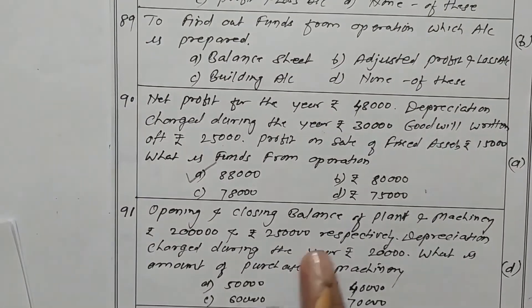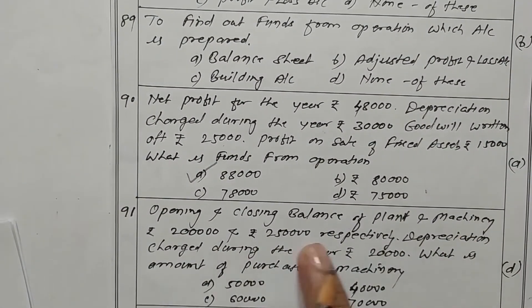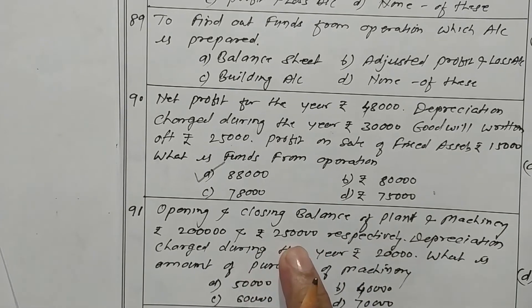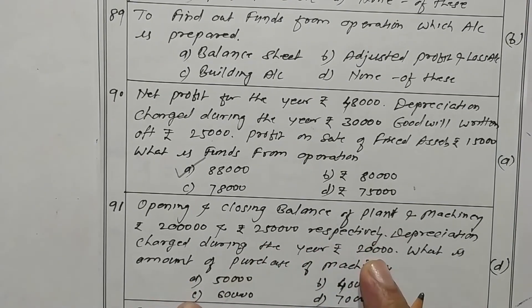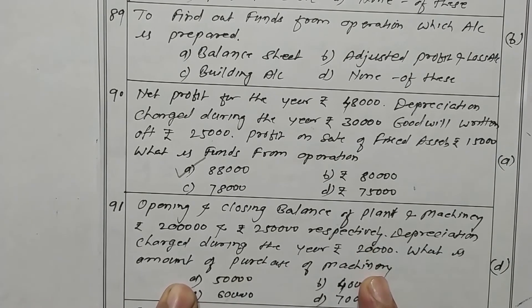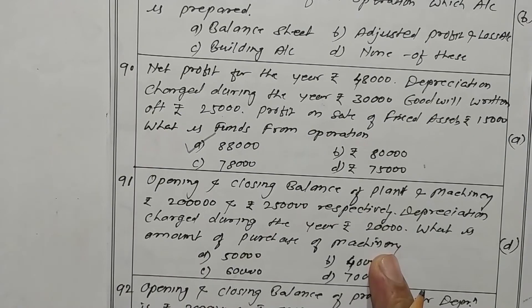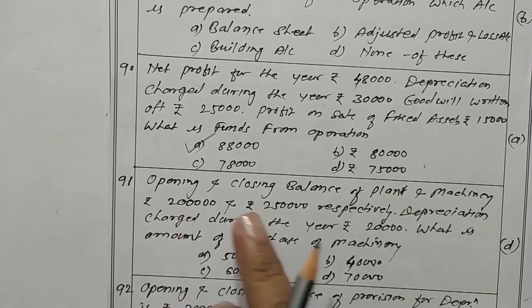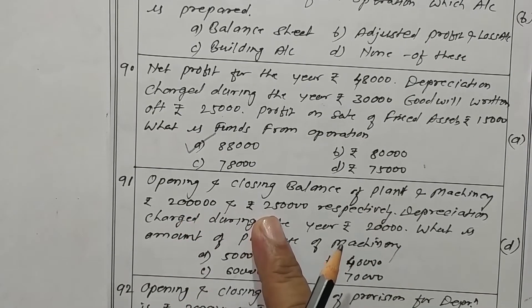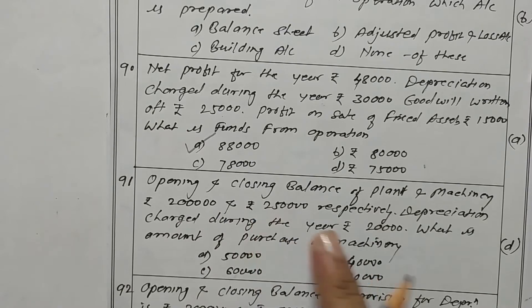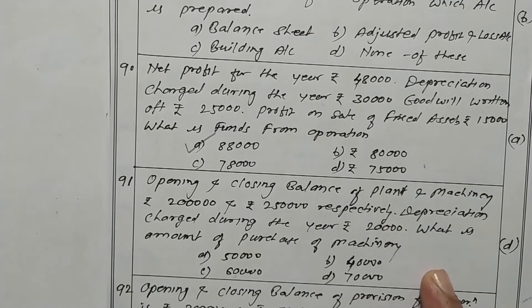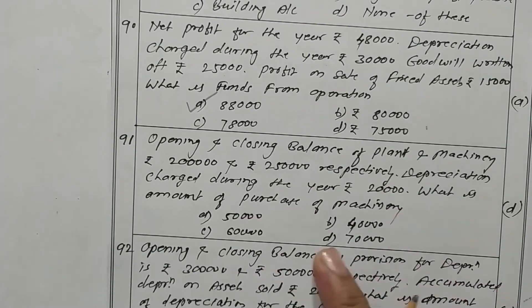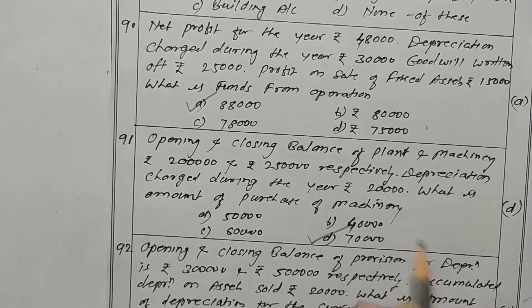Opening and closing balance of plant and machinery is rupees 2,00,000 and rupees 2,50,000 respectively. Depreciation charged during the year is 20,000. Amount of purchase of machinery: closing minus opening difference is rupees 50,000, plus depreciation 20,000, gives rupees 70,000 as the amount of purchases. Option D is the correct one.